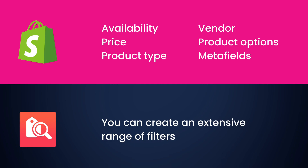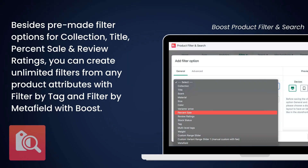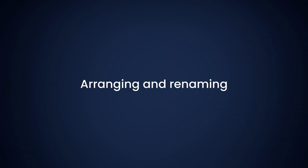That's why online merchants need our app to fill in the gaps. With us, you can create an extensive range of filters — besides pre-made filter options for collection title, percent sale, and review ratings — you can create unlimited filters from any product attributes using filter by tag and filter by metafield. What about arranging and renaming the filter options?